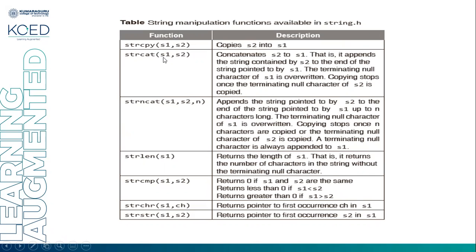Next, strcat(S1, S2) concatenates S2 to S1 — it appends the string contained in S2 to the end of the string pointed to by S1. S1 will retain its content, and the content of S2 gets appended. The terminating null character of S1 is overwritten by the content of S2, and copying stops once the terminating null character of S2 is copied.